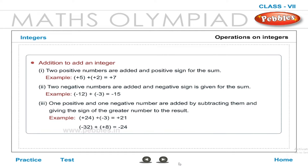Operations on integers — Addition: Two positive numbers are added and a positive sign is given to the sum. Example: (+5) + (+2) = +7. Two negative numbers are added and a negative sign is given to the sum. Example: (−12) + (−3) = −15. One positive and one negative number are added by subtracting them and giving the sign of the greater number to the result. Example: (+24) + (−3) = +21, and (−32) + (+8) = −24.